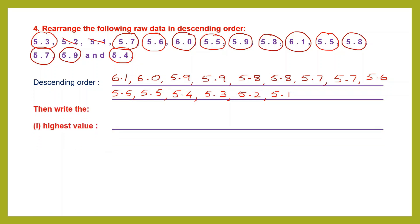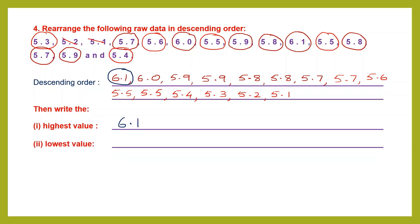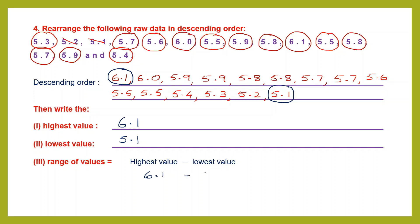They are asking us to write the highest value — that is the number we started with, 6.1, because we wrote in descending order. The lowest value is the last number we wrote: 5.1. Now we find the range: highest minus lowest, which is 6.1 minus 5.1. 1 minus 1 is 0, put the point, 6 minus 5 is 1. So the range of values is 1.0, or simply 1.